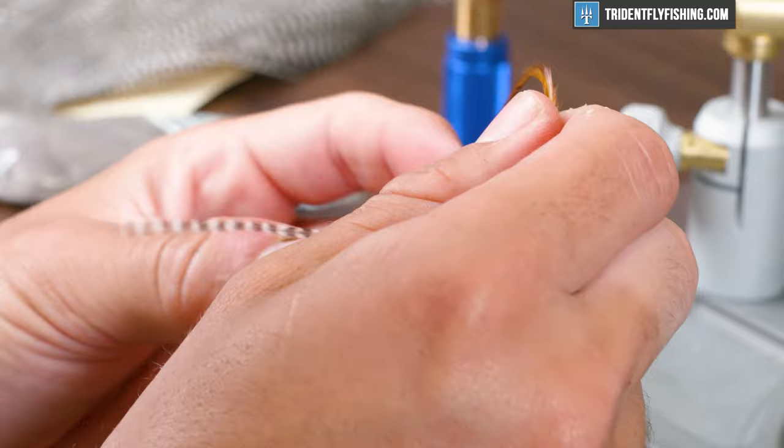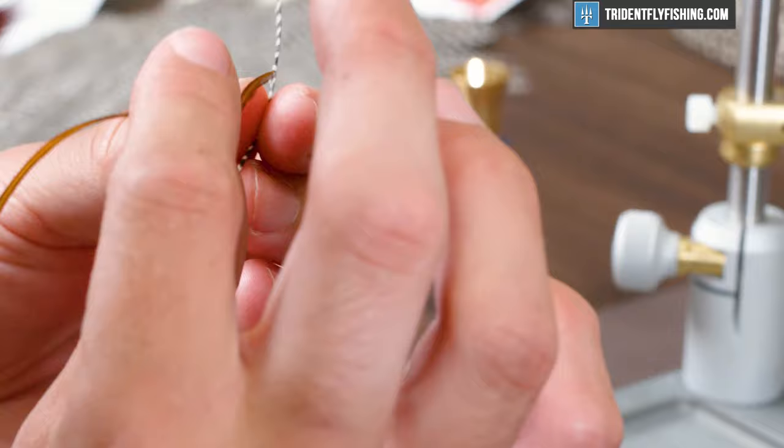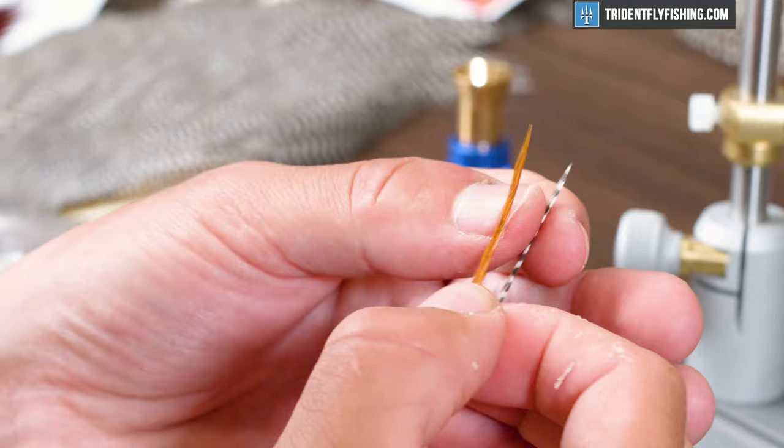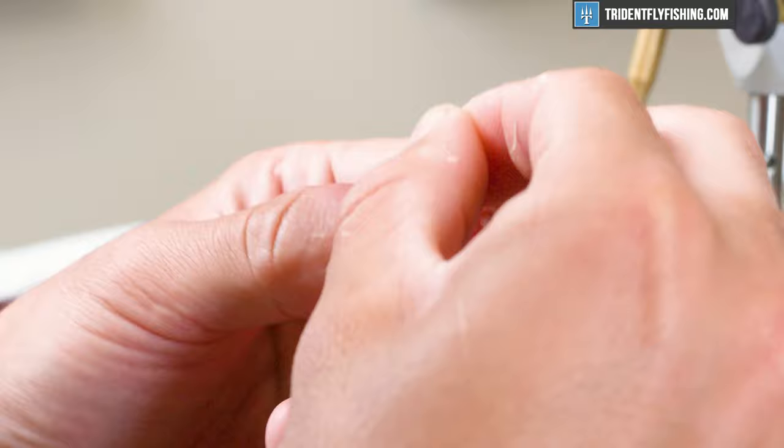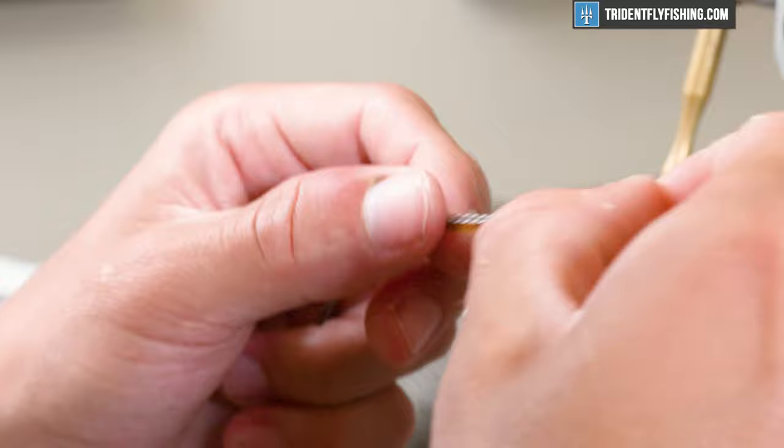What we want to do now is just put these feathers with the points facing up. We want to get the stem side wrapped and tied down. We're just going to match these up. Make sure they're the same size. You don't want two different sized feathers in there because it's going to look weird on the wing.